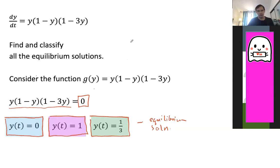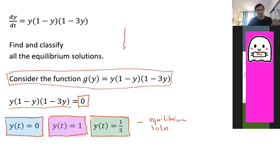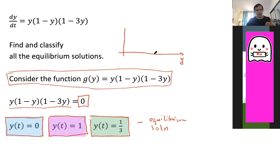Now let's classify the equilibrium solutions. We are going to consider this function g, which is given by the right-hand side of this differential equation. However, we know that y really is a function, but for one second let's think of y just as the regular independent variable, like in calculus one. When we want to sketch a graph of this function, we call this the y-axis, and think of y just like the ordinary independent variable. We know that this polynomial has three roots.